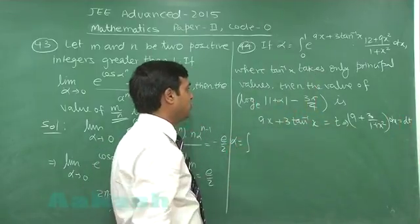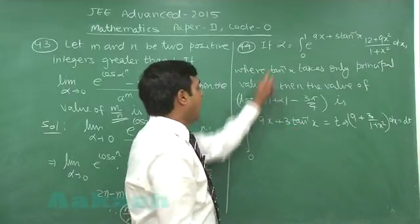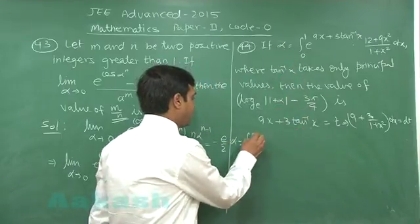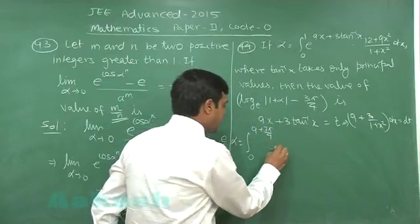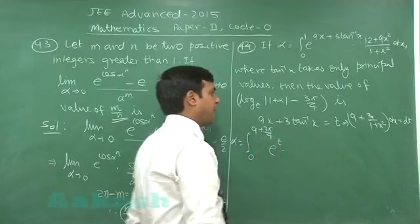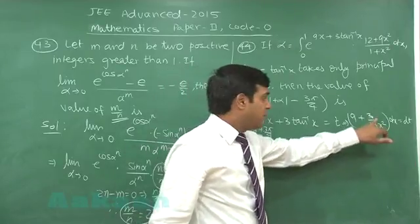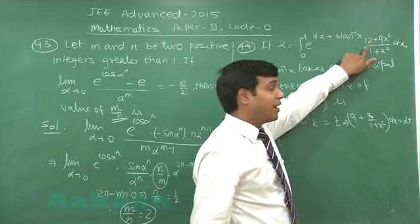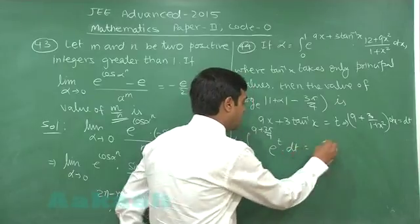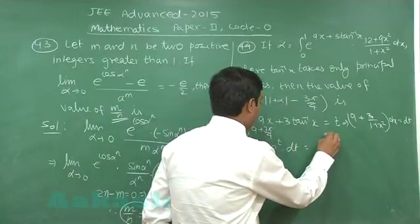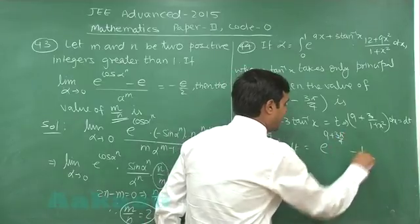So, alpha changes to: when lower limit is 0, it is also 0. Upper limit is 1, it is 9 plus 3 pi by 4. e to the power t multiplied with, on taking LCM, it is 12 plus 9x square upon 1 plus x square dx, same as the given one. So, it is simply dt or e raise to the power 9 plus 3 pi by 4 minus 1.